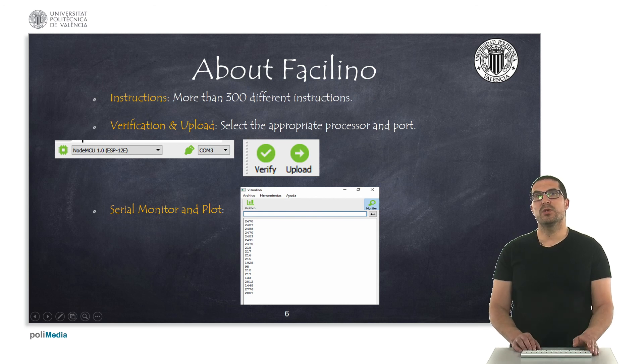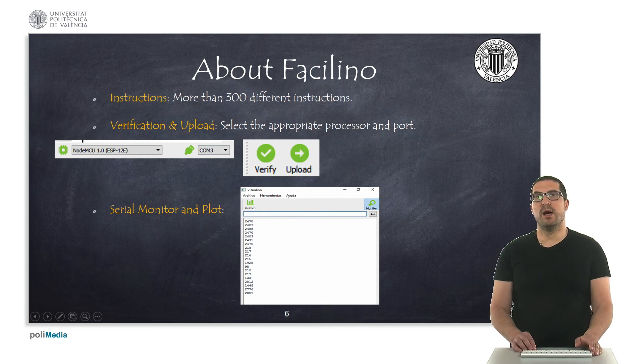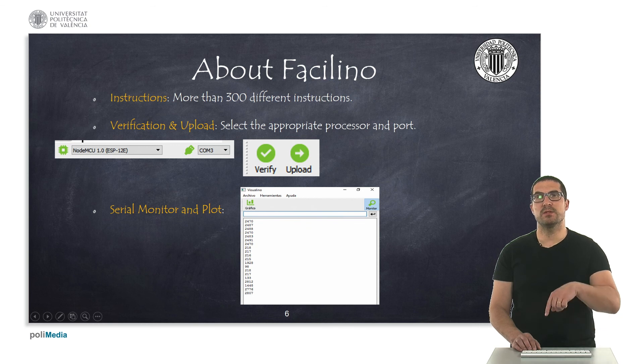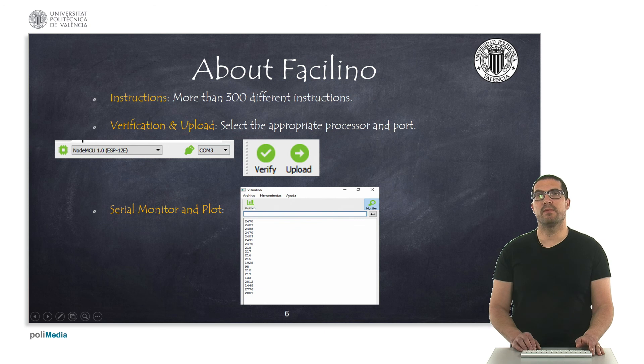Before that, you have to select the correct processor and the correct COM port. Once you have your code uploaded, using the serial utility instructions, you can plot and display text, numbers, and things like that, or even display a graph in a plot using the serial monitor provided in Facilino.